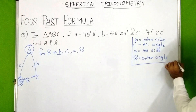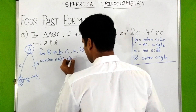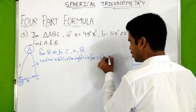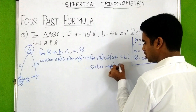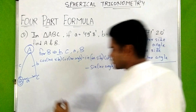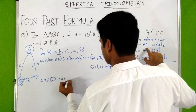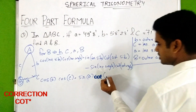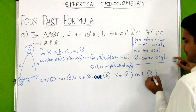Now we write the formula: cos(inner side) × cos(inner angle) = sin(inner side) × cot(outer side) − sin(inner angle) × cot(outer angle). Substituting: cos(a) × cos(C) = sin(a) × cot(b) − sin(C) × cot(B). Inner side is small a, inner angle is capital C, outer side is small b, and outer angle is capital B.